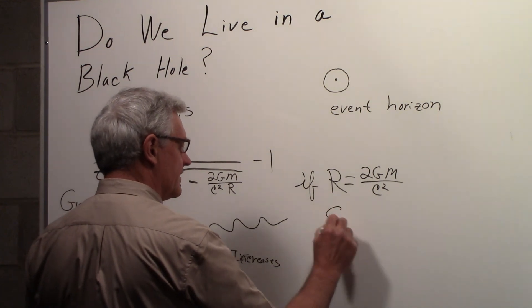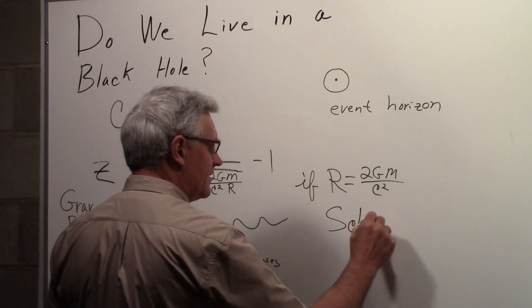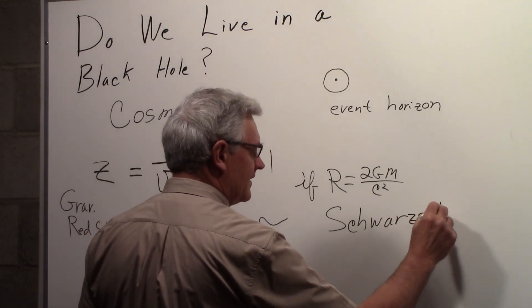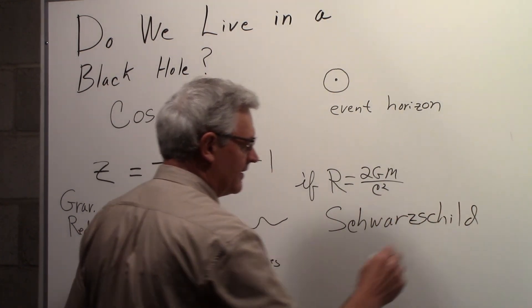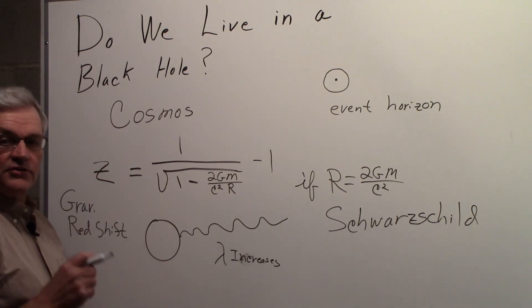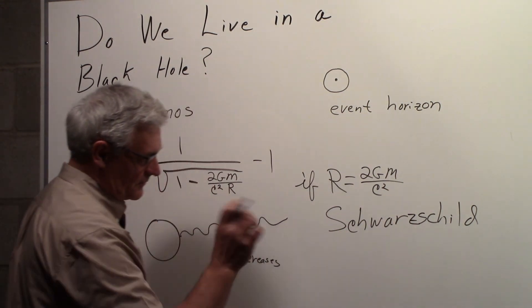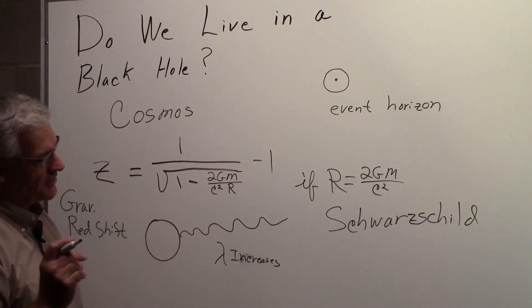And that radius is called the Schwarzschild radius: S-C-H-W-A-R-Z-S-C-H-I-L-D. I think that's right, Schwarzschild.